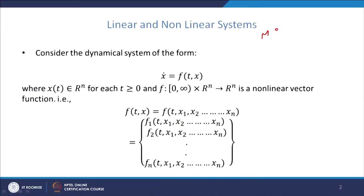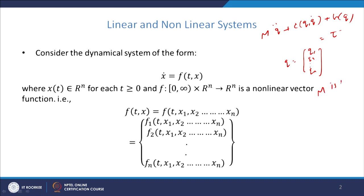We have seen that the dynamic equation can be written as M·q̈ + C(q)·q̇ + g(q) = τ, where q is a vector containing q₁, q₂, …, qₙ — the joint variables — and M is the inertia matrix, an n×n matrix. From this we can see that this represents n second-order ordinary differential equations, because it contains the second derivative of q₁, q₂, …, qₙ.